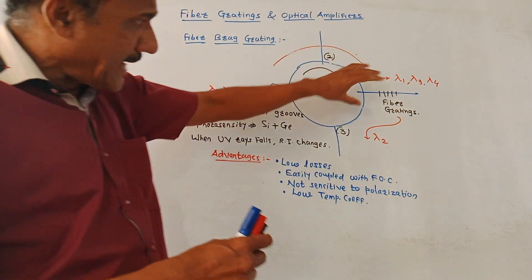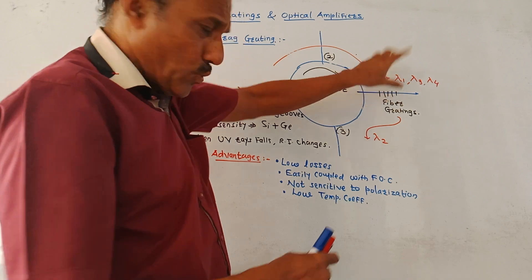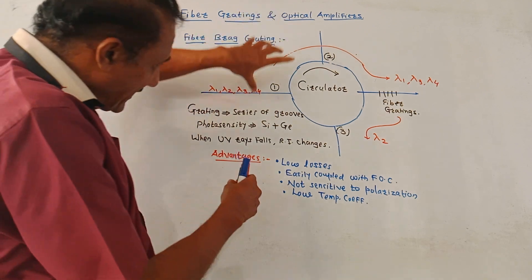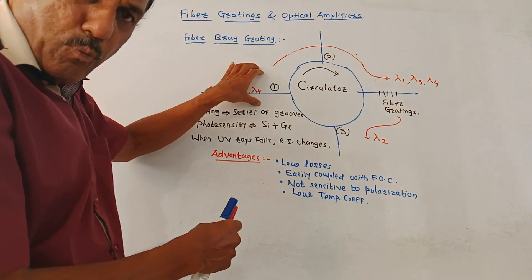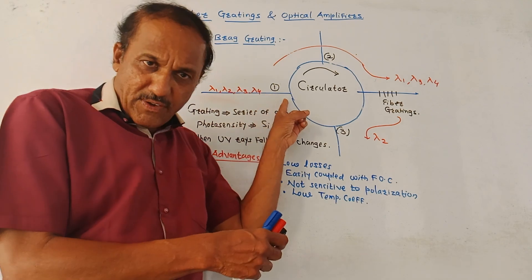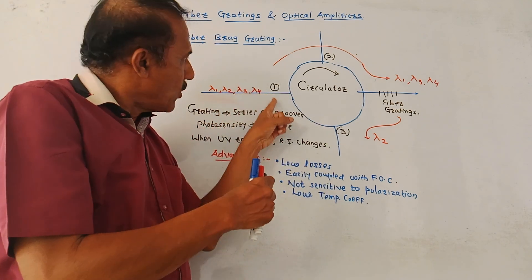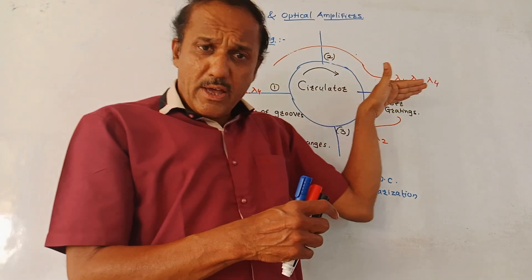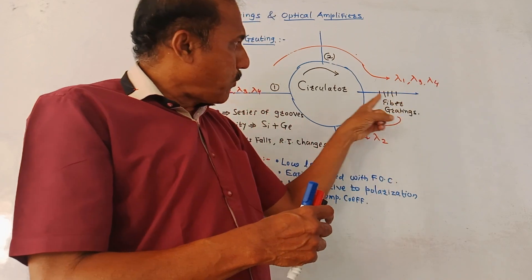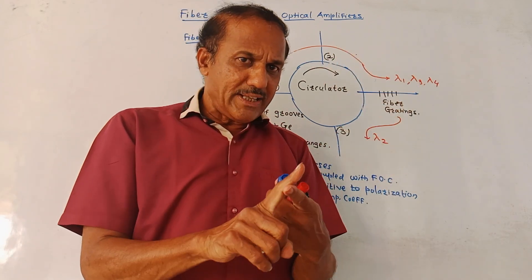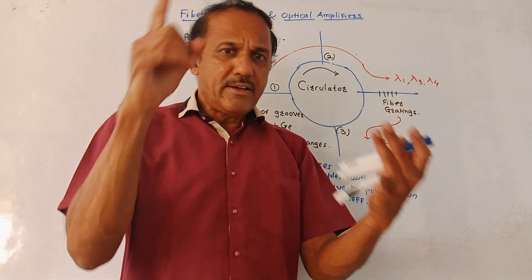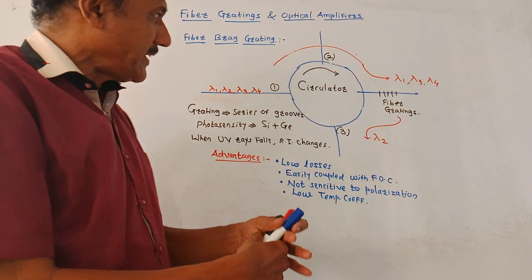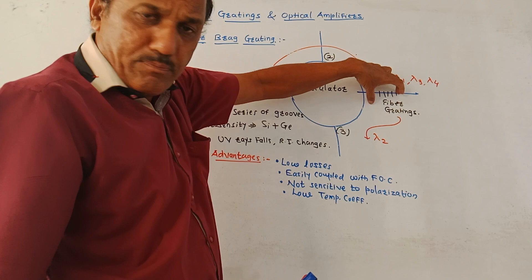In this case, fiber gratings are formed at port 2. Incoming wavelengths are lambda 1, lambda 2, lambda 3, and lambda 4, all applied as input to port 1. Then all these wavelengths are passed towards port 2. We have created gratings at port 2 such that a particular wavelength, lambda 2, will be reflected. The remaining wavelengths — lambda 1, lambda 3, and lambda 4 — will be transmitted. This is how fiber gratings are designed.